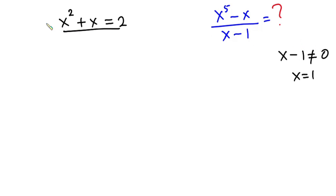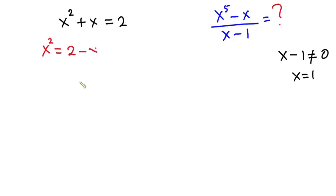Now let's focus on this equation. From this equation I'm going to make x squared the subject. So we have x squared is equal to 2 minus x. I'll call this equation 1.